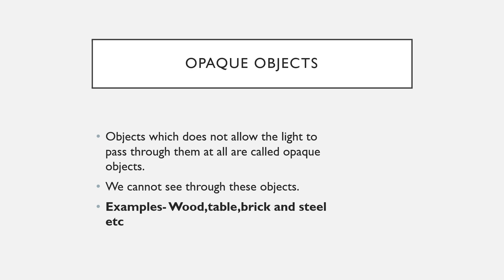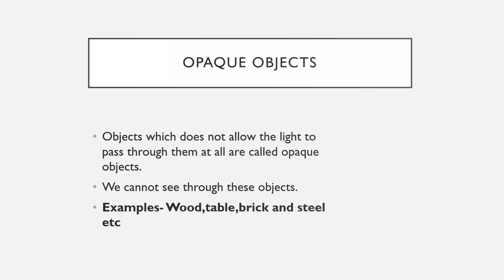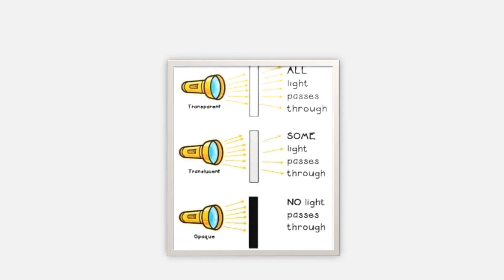Human beings and plants are also examples of opaque objects. In a diagram, you can see that transparent objects allow all light rays from a torch to pass through. Translucent objects allow only a few rays to pass through, and opaque objects allow no light to pass through at all.